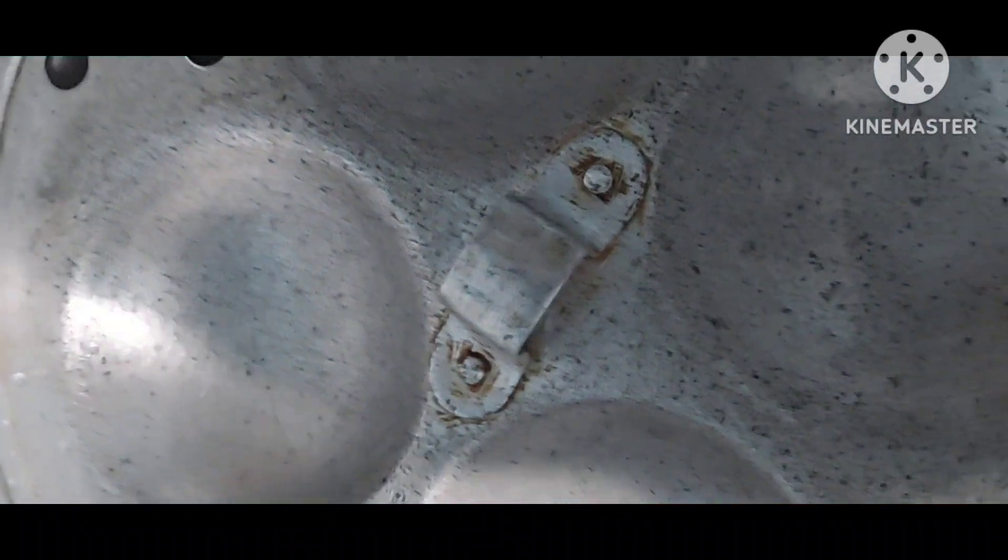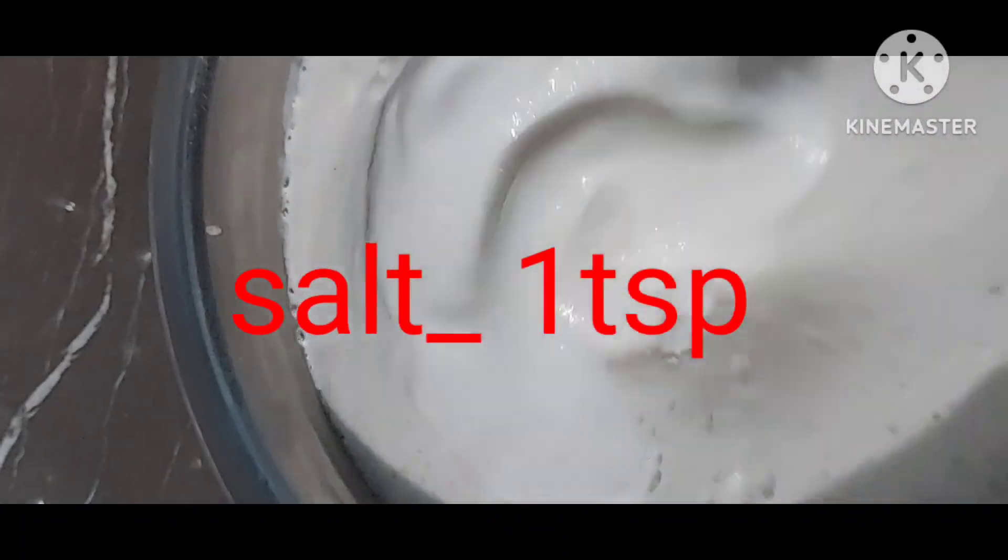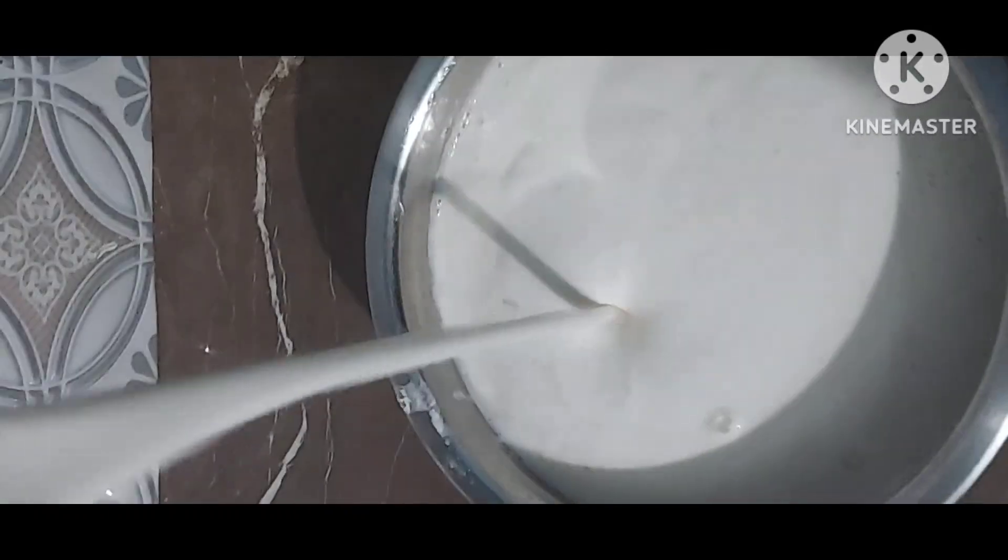Take an idli vessel, add two cups of water, and place on flame. Wait for water to heat. Take the idli batter and add one tablespoon salt.